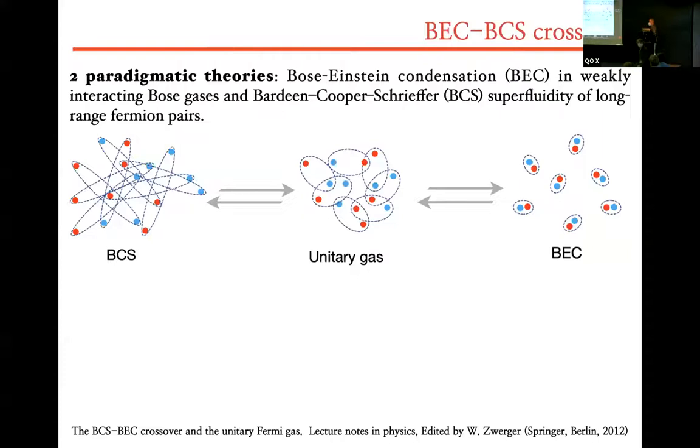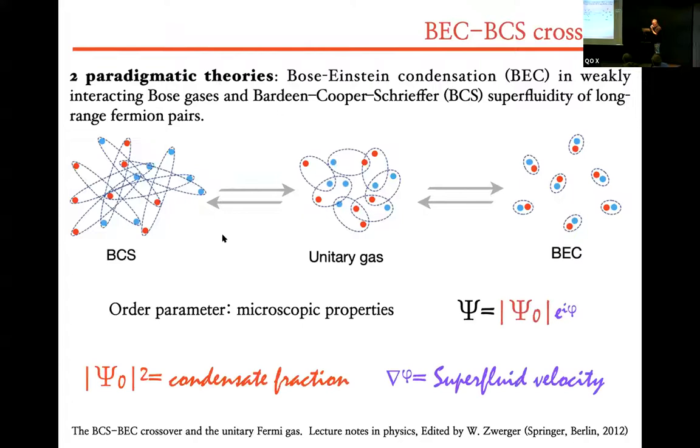As most of you know, there are two paradigmatic theories of superfluidity. On one side, we have Bose-Einstein condensate of weakly interacting Bose gases. On the other side, we have the BCS superfluid of long range copper pairs. And in the middle, there is the celebrated unitary Fermi superfluid. It is almost 20 years old that people are starting this with ultra-cold atoms. You like to describe any of these systems with an order parameter. The amplitude is connected to the condensate fraction and the phase and the gradient phase to the superfluid velocity.